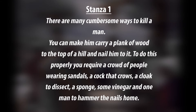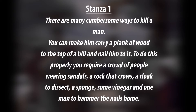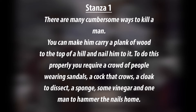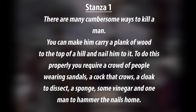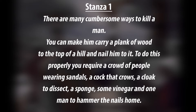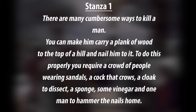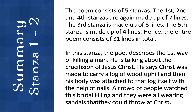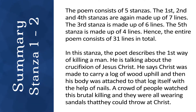Stanza one: There are many cumbersome ways to kill a man. You can make him carry a plank of wood to the top of a hill and nail him to it. To do this properly you require a crowd of people wearing sandals, a cock that crows, a cloak to dissect, a sponge, some vinegar, and one man to hammer the nails home. The poem consists of five stanzas — the first, second and fourth are made up of seven lines, the third of six lines, and the fifth of four lines, totalling 31 lines.